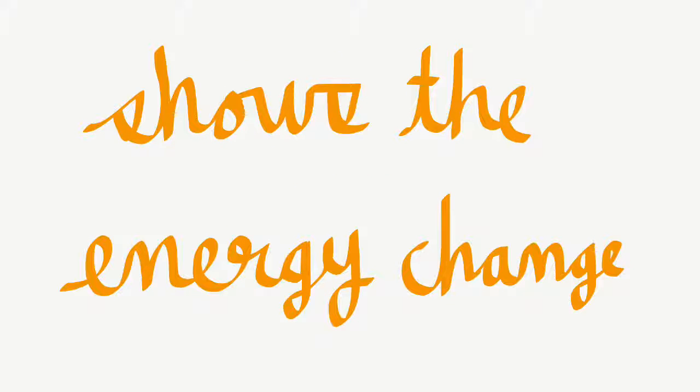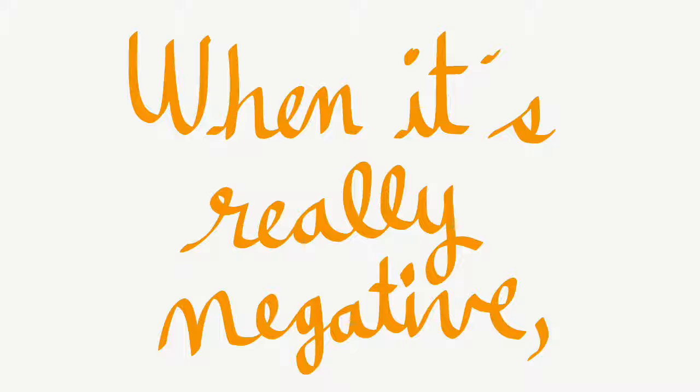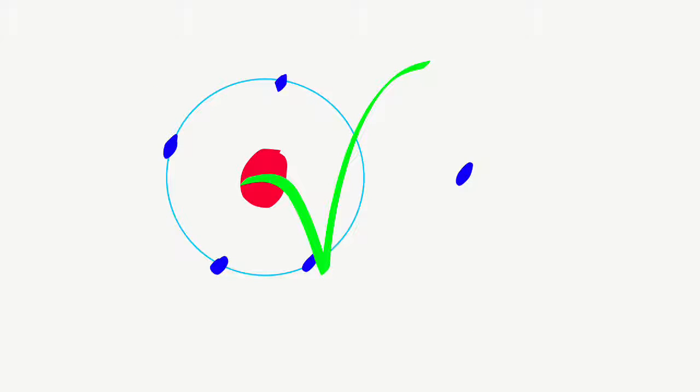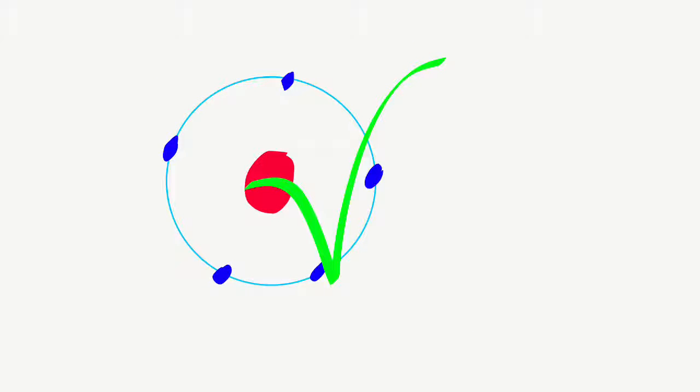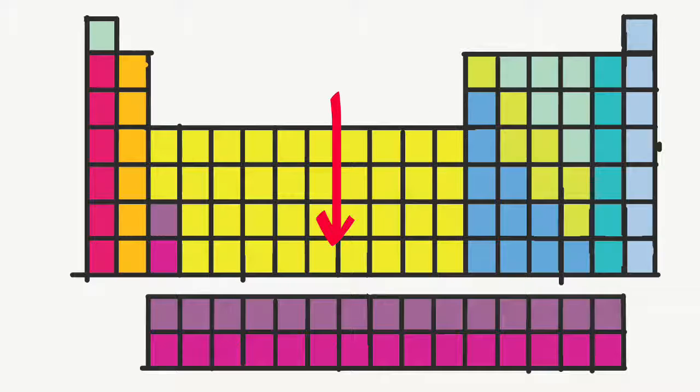Electron affinity shows the energy change when an atom absorbs an electron. When it's really negative, the atom is more likely to accept an electron. It goes up when you go across a period and it goes down when you go down a group.